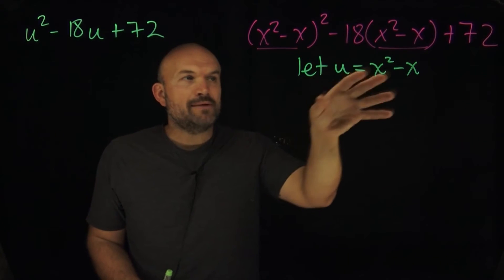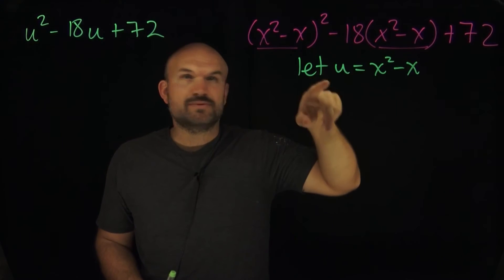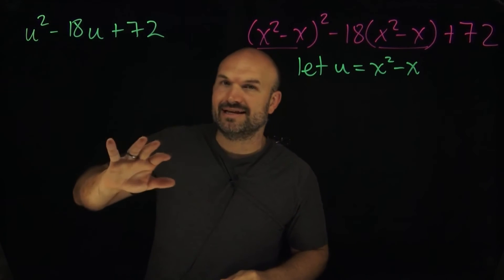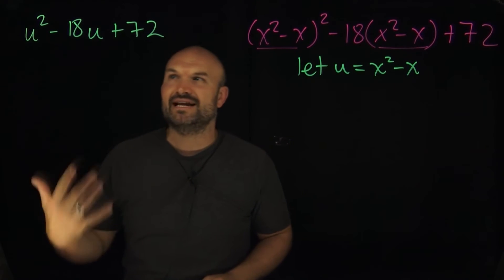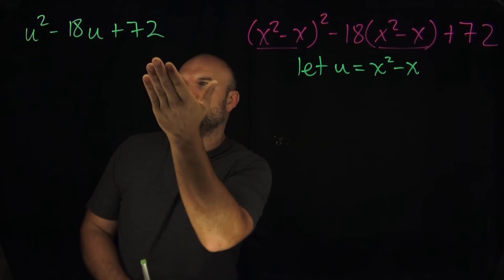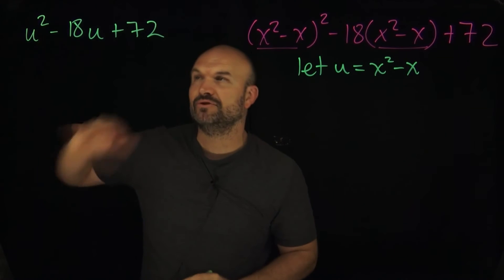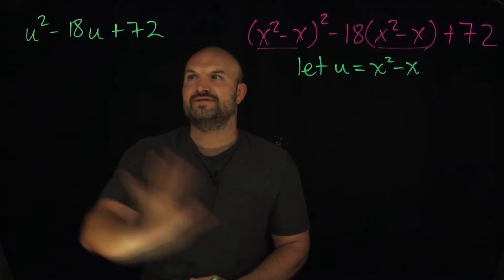The whole idea is by replacing x²-x with u, I now have a quadratic that is much easier for me to identify. Like what two numbers multiply to give me 72 and add to give me negative 18? I'm not really worried about trying to figure out what these expressions are.